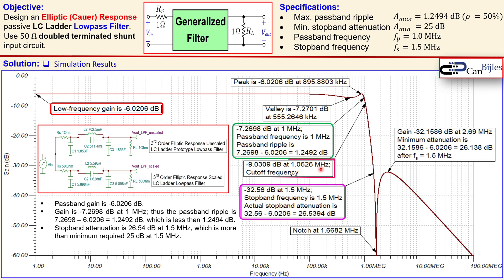As extra information, the cutoff frequency is 1.0526 MHz, though its calculation is not covered in this example. All the specifications have been met and the design is complete. See you next time in another video — take care.